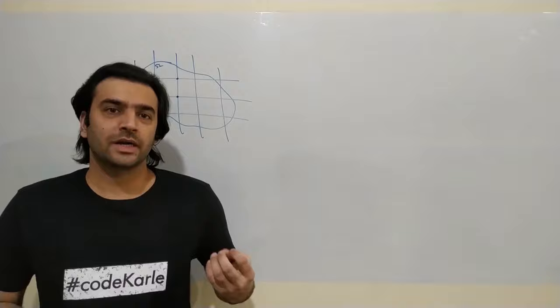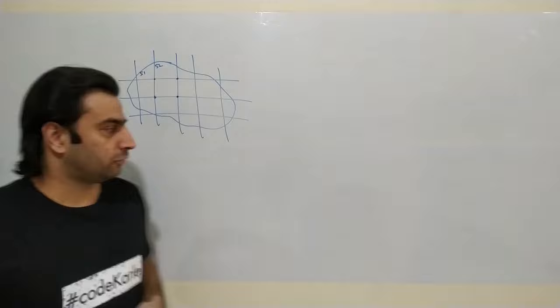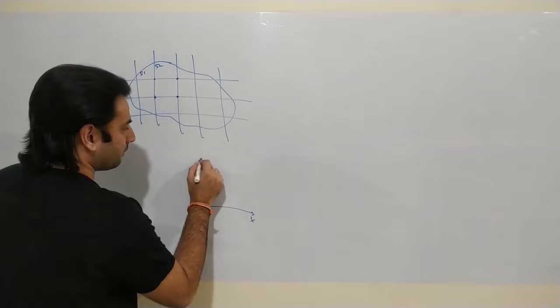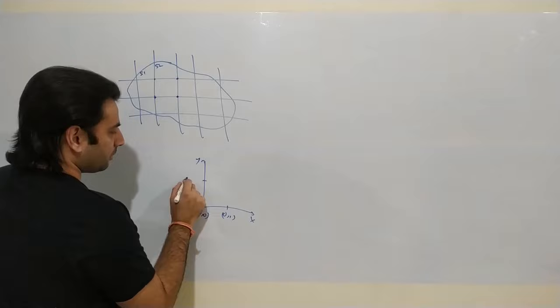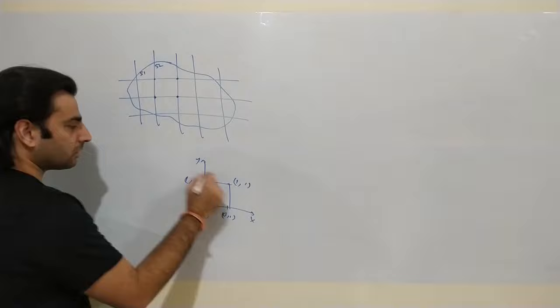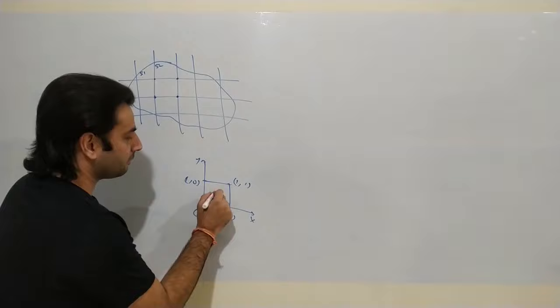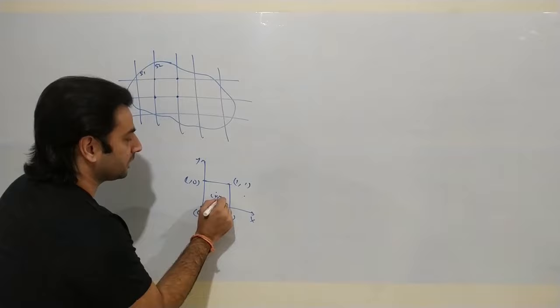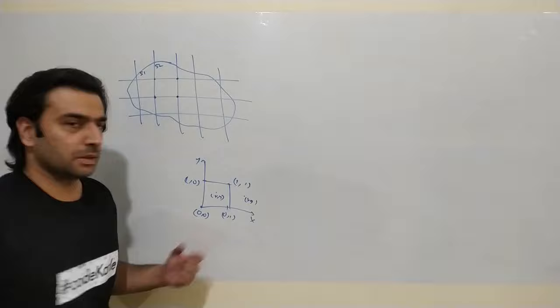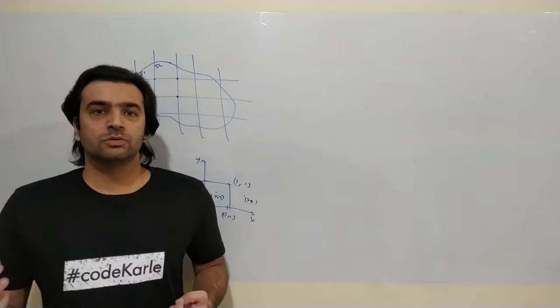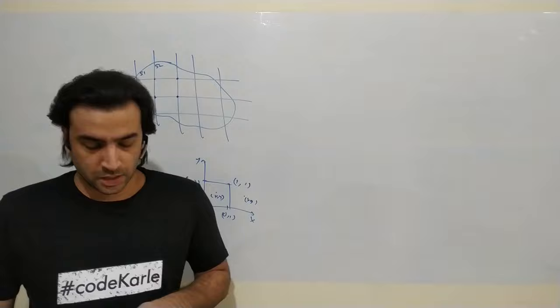Whether a point lies within a particular segment is something we should easily be able to calculate. Think of it like a coordinate system with x-axis and y-axis: point 0,0; point 0,1; point 1,0; and point 1,1 — a unit square. Whether a point lies within this or outside we can easily identify based on its coordinates. Similarly, based on lat-long coordinates we should be able to identify whether a point lies in a particular segment.